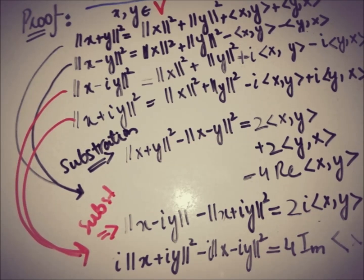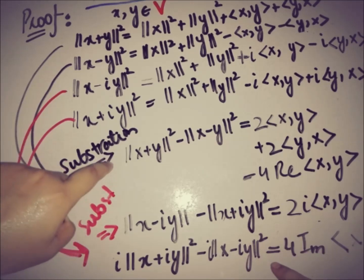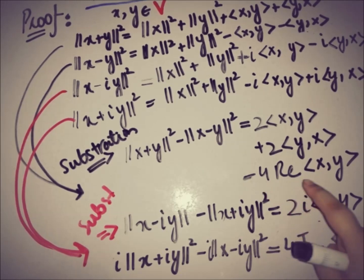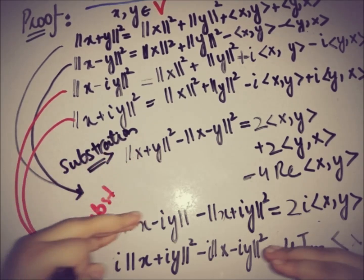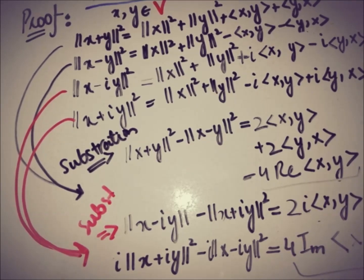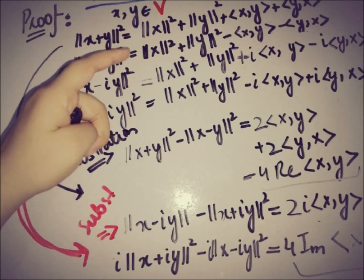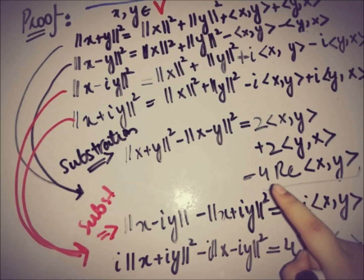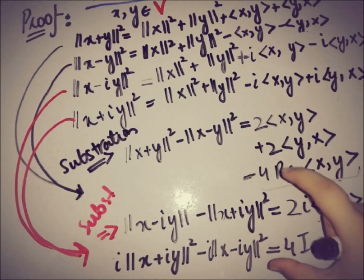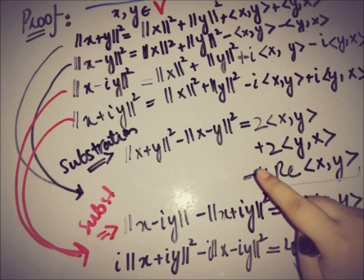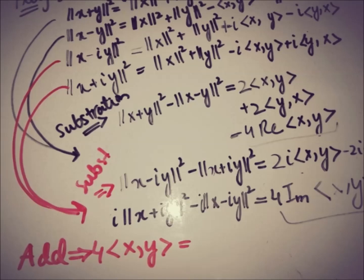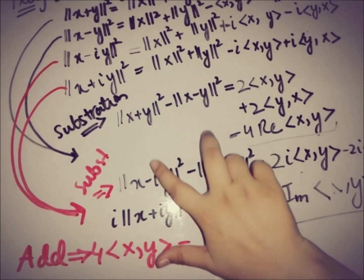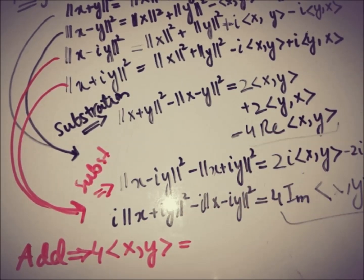Adding these two results — four times the real part of the inner product of x and y, plus four times the imaginary part of the inner product of x and y — gives us the polarization identity. Since x and y are from a complex inner product space, combining the real and imaginary parts yields four times the inner product of x and y, which is exactly what the polarization identity states.